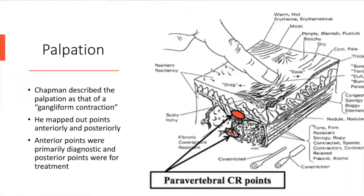Frank Chapman described subcutaneous points that correlated to visceral dysfunction. He called them a ganglia form contraction — that is just a nomenclature he made up. They're not actually ganglia form; they're not ganglia, which would be nerve cell bodies outside the central nervous system. He mapped out these points anteriorly and posteriorly on the body, correlated to visceral dysfunction. The anterior points he used primarily for diagnostic purposes, and the posterior points were for treatment purposes.